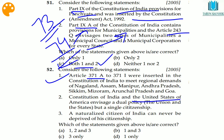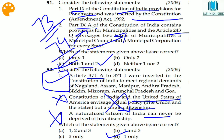The Constitution of India and the United States of America both have dual polity but single citizenship. India has single citizenship while the USA has dual citizenship. The second statement — that a naturalized citizen of India can never be deprived of citizenship — is wrong; citizenship can be deprived if obtained by fraud. The statement about citizenship in the United States is also wrong. So only statement one is correct — option B.